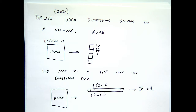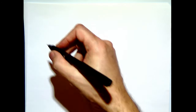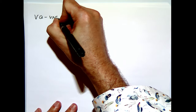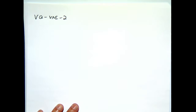Before leaving this topic: there was then VQVAE 2, a sequel from the same group at DeepMind. One thing we noticed is that the ability to create new images is fairly limited to low resolution — like 32×32 or 64×64. The key innovation of VQVAE 2 was to enable much higher resolution output, for example 1024×1024 images.